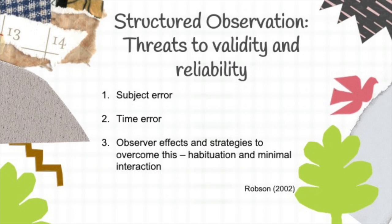The following shows three issues relating to validity and reliability of structured observation. First, subject error — for example, if you wanted to observe the competency of workers, but on the day of your observation the worker you observed is a new worker on his first day, this will affect the validity and reliability of the observation. Second, time error may happen when you observe the situation at the wrong time — for example, choosing Monday 8am to observe a viral restaurant is not a suitable time. To overcome these issues, observers can use habituation and minimal interaction.